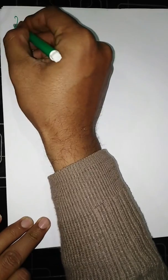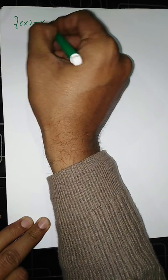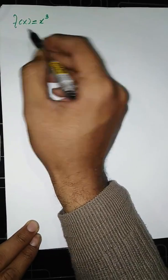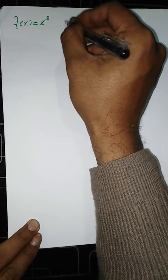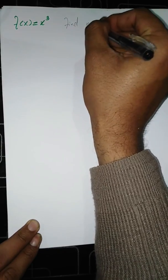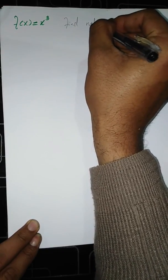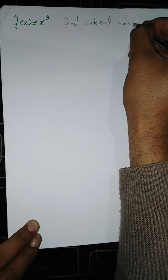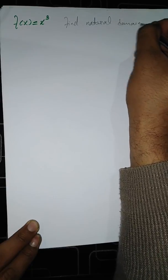Let's suppose we have the expression f of x equals x cubed. In this example we have to find the natural domain.